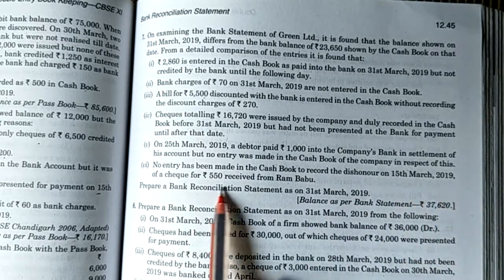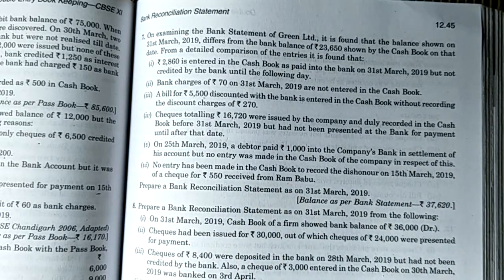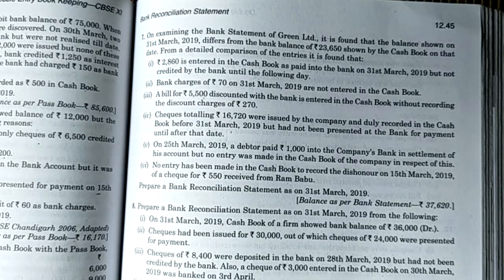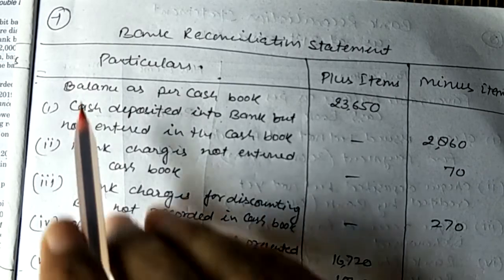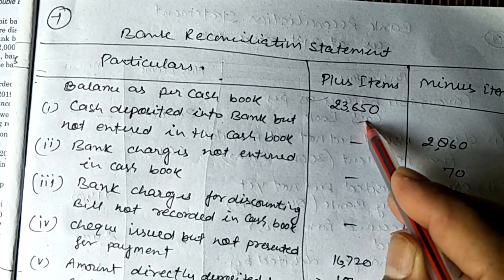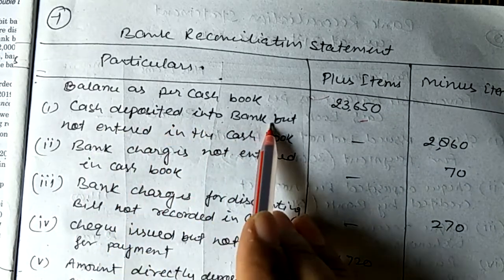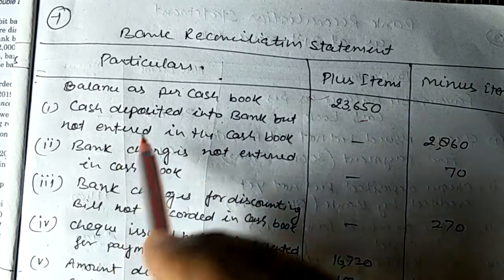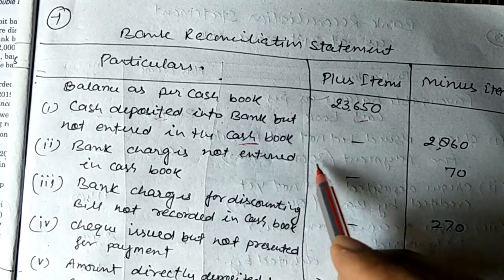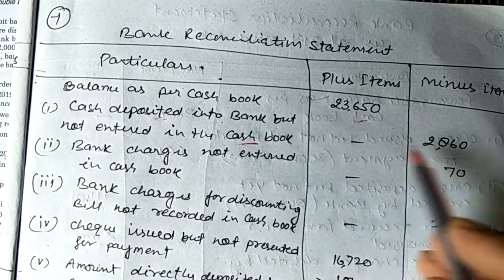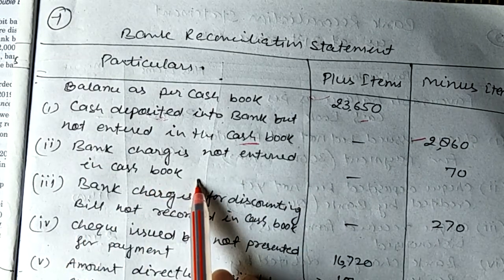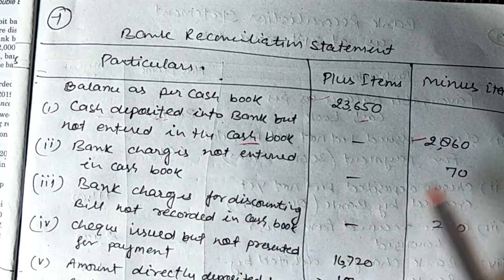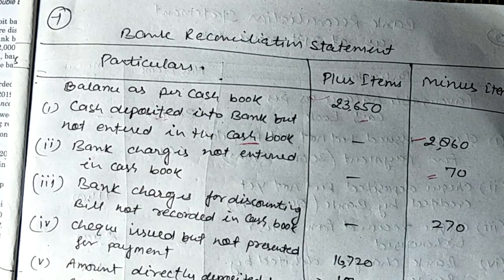Record the dishonored cheque: on 15th March 2019, a cheque of 550 received from Ram Babu — the money we were supposed to receive from Ram Babu — its recording has not been done yet and the cheque has been dishonored. We deposited it but re-entry has not been made in the cash book, so here what will happen is it will be minus, because we need to equalize the passbook and cash book.